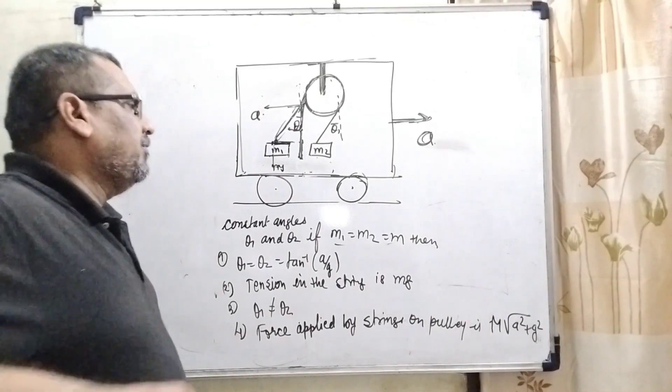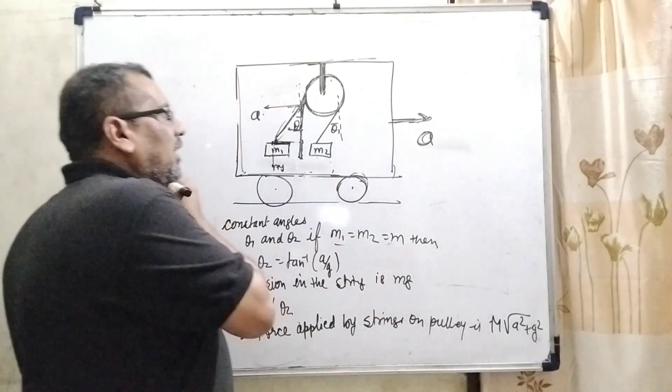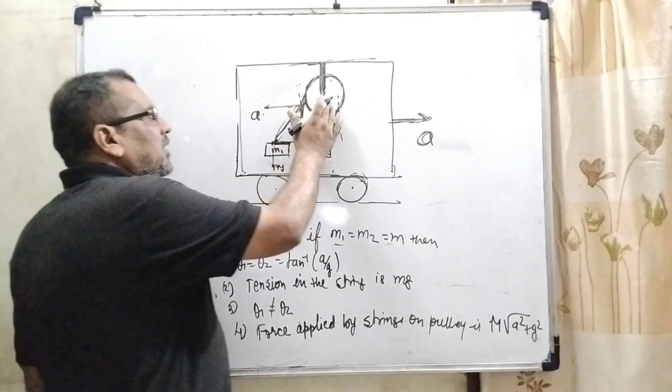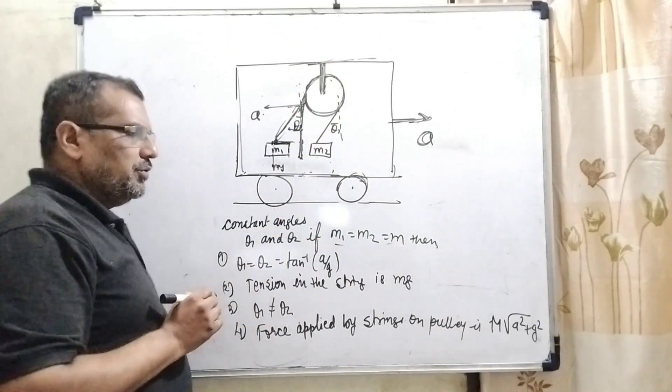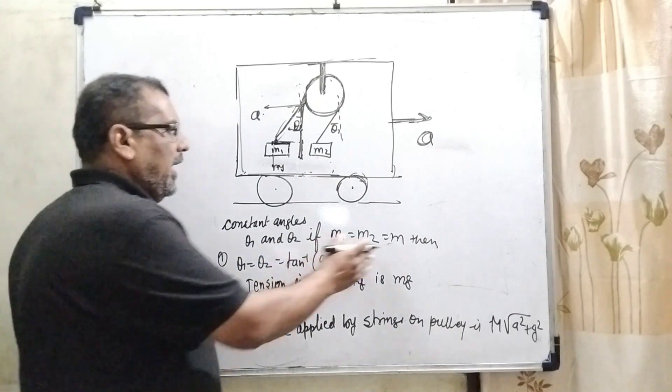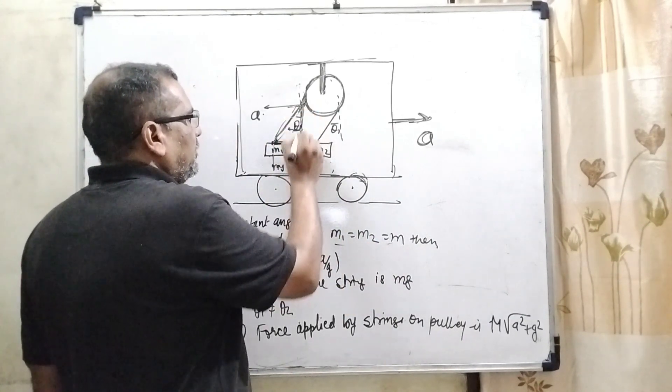In this question, we have given that the trolley is moving to the right side and this pulley is fixed to the roof of this trolley. Two blocks m1 and m2, equal to small m, are connected with this string and making angle theta1 on the vertical.